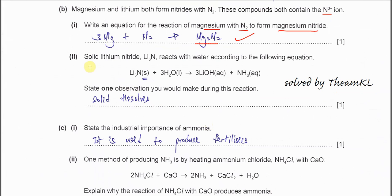For part 2, solid lithium nitride reacts with water according to this reaction. State one observation you could make during this reaction. Because it forms lithium hydroxide and ammonia they are colorless, you cannot really see any colors there. What you can really observe is when you put this lithium nitride in water, this solid will dissolve. What you see is only solid dissolves.